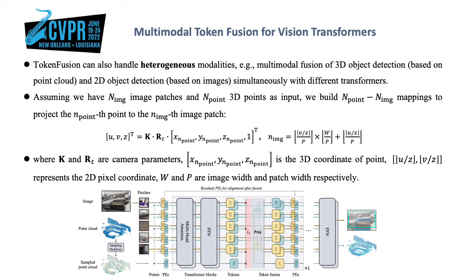Token fusion connects two different transformers — one for images and one for points.